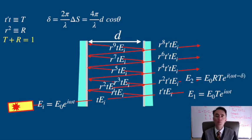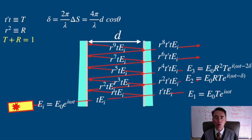The second beam will be written as E0 capital R capital T e to the iωt minus δ because of the phase difference. The third outgoing beam will be E0 capital T e to the iωt minus 2δ and so on.